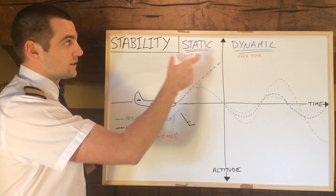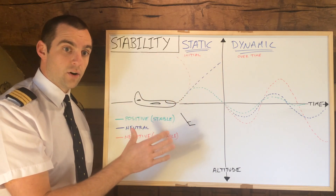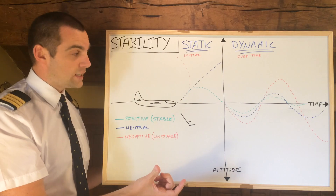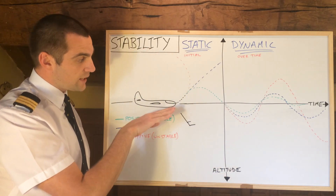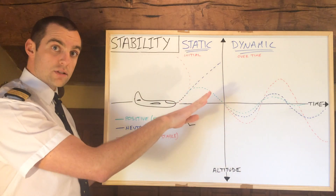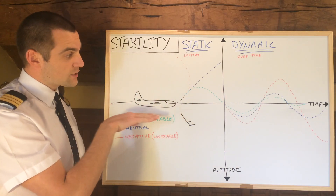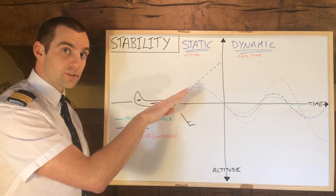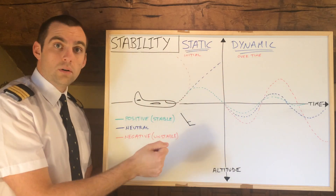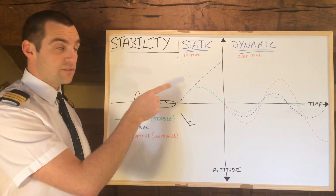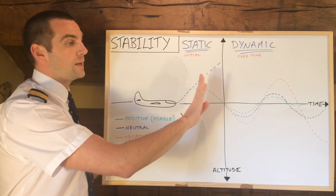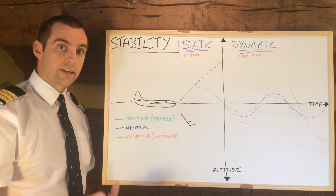Static stability is the initial tendency of the aircraft — what will it do next after the upset. If we have positive static stability, the initial tendency is going to be to pitch back down in this case. If it has neutral static stability, the initial tendency will be to stay where it was left — so after the upset, if it was left nose up, it would continue in that nose-up attitude until disturbed again or pilot input corrected it. And if it had negative static stability, it would overemphasize that disruption — in this case it would pitch nose up and keep pitching up. These are the three types of static stability.